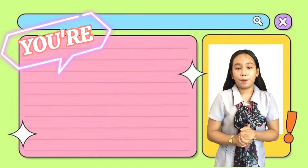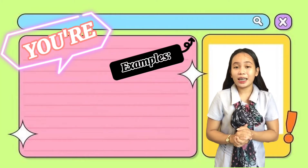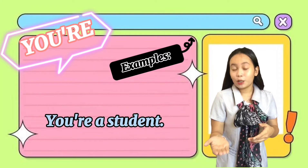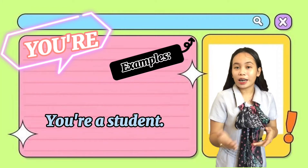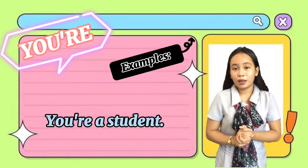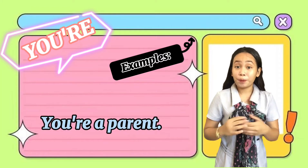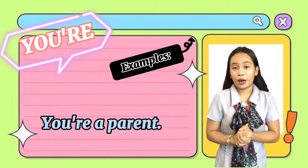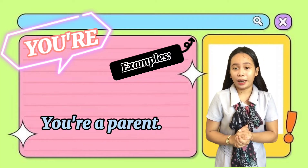Let's look at some examples. First is: 'You're a student' — you are a student. 'You're a parent' — you are a parent.